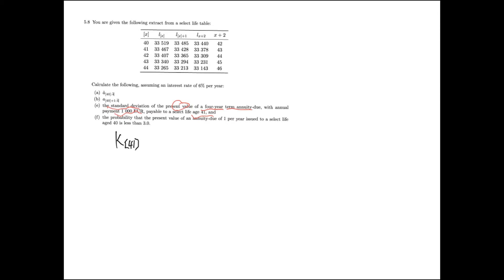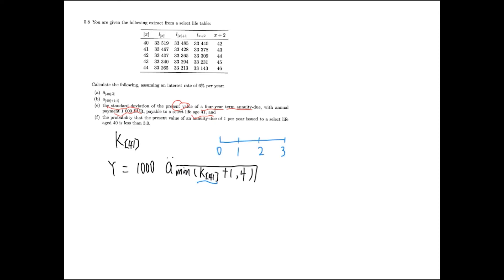If we denote the present value of this annuity due as random variable Y, we can write it in the following way: if the integer part of the future lifetime k[41] is less than or equal to 3, then this person is going to receive k[41] plus 1 payments. And if the integer part is greater than or equal to 4, then this person receives at most four payments. Y is a random variable because it is related to k, and we are going to derive its standard deviation by first figuring out the distribution.